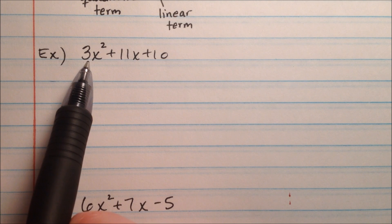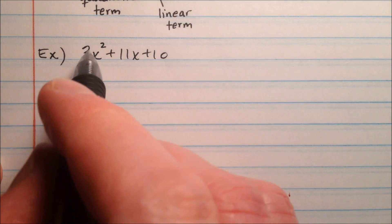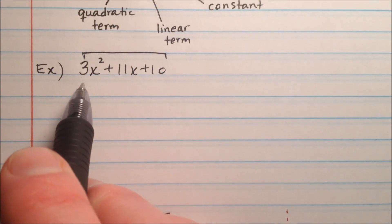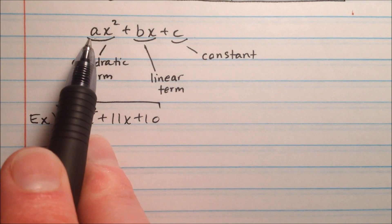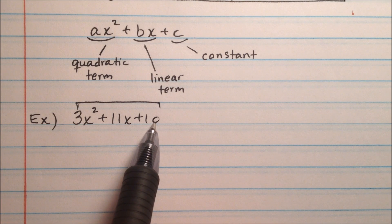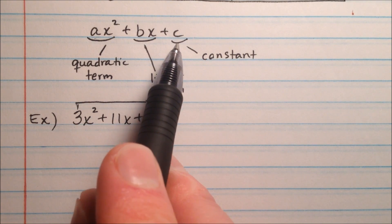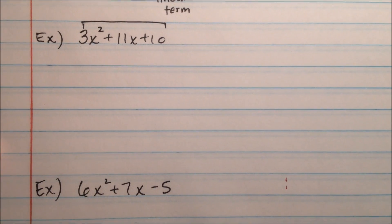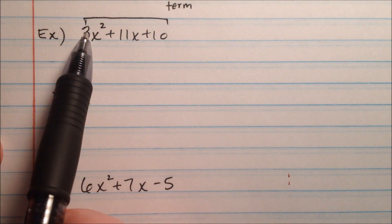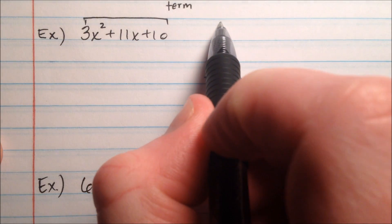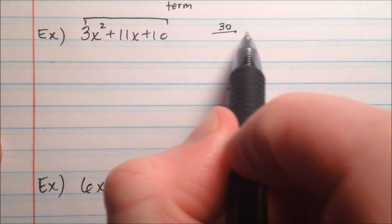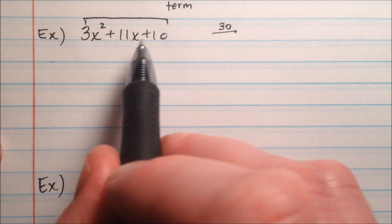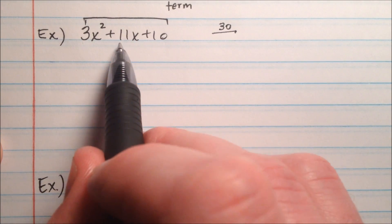So we're going to use a method called the AC method, which means we take this 3 — our a-value — and multiply it by the 10, our constant, which is the c-value. That's where it gets the name AC method. We multiply the a-value and the c-value together: 3 times 10 is 30. Now that we know it's 30, I want factors of 30 that still make this linear term equal to 11.